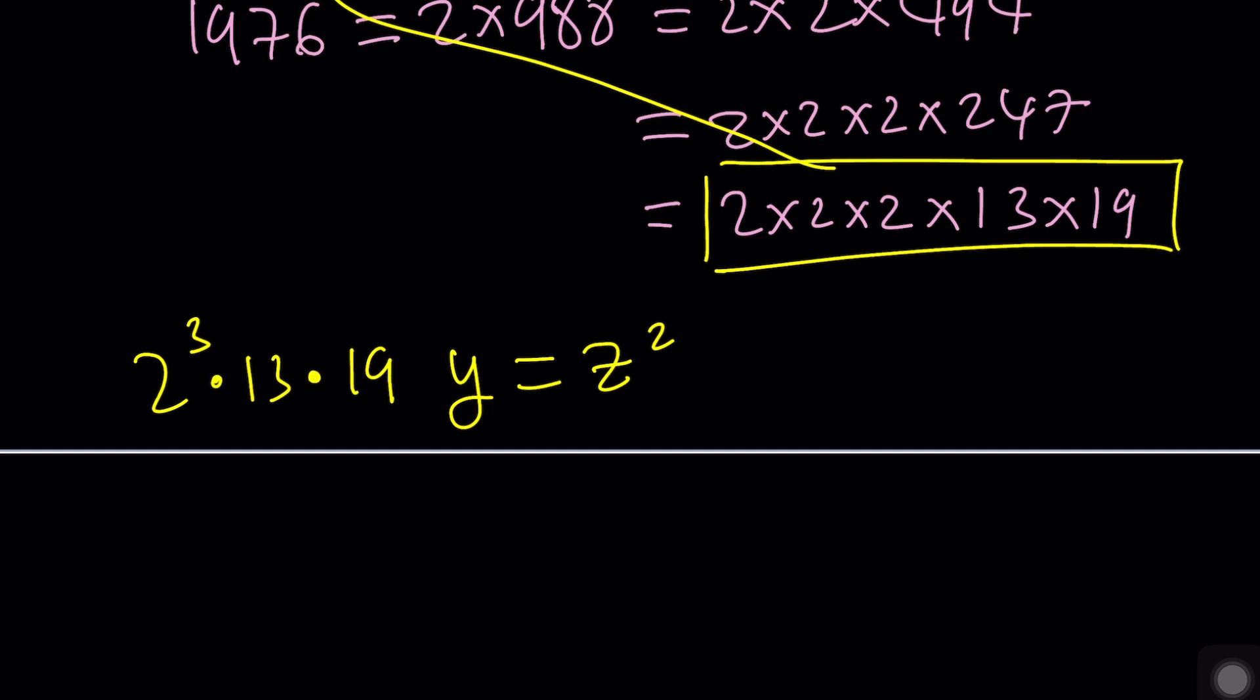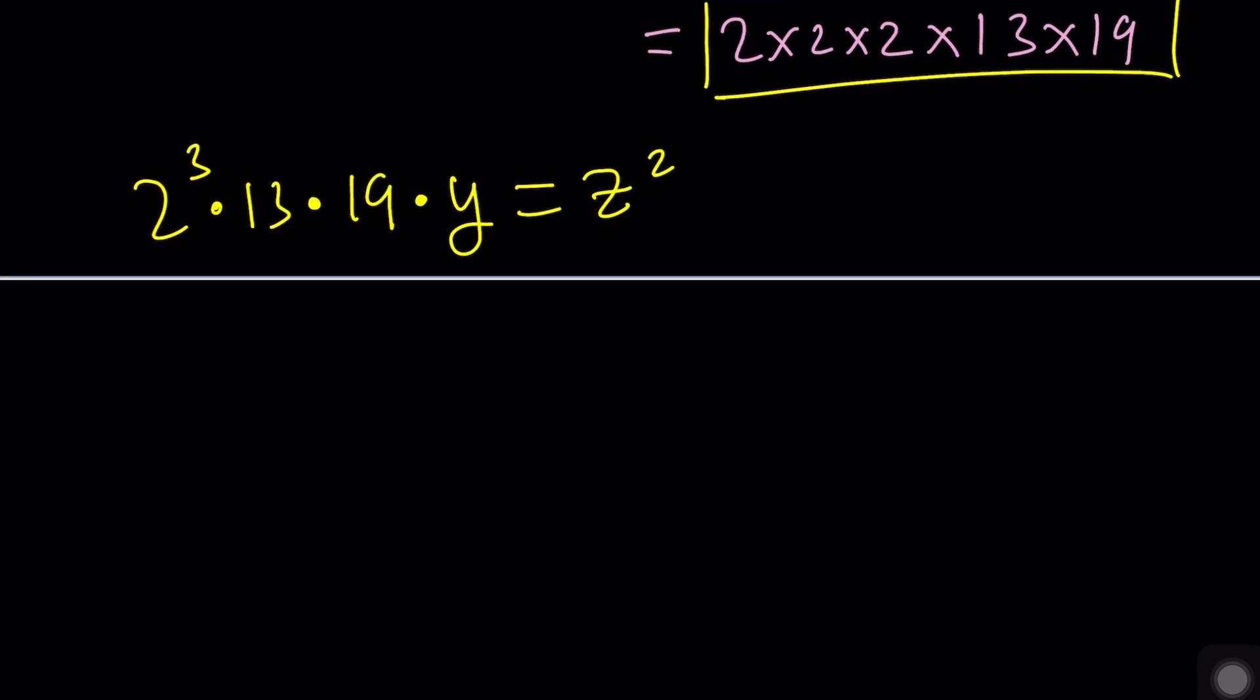Now if you want z squared to be a perfect square, then we need to multiply this expression by at least a 2, because that'll make it 2 to the fourth power times 13 times 19. That'll make z squared equal to 2 to the fourth times 13 squared times 19 squared, which is a perfect square.